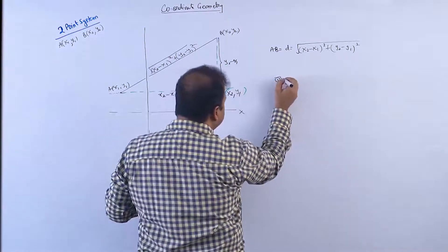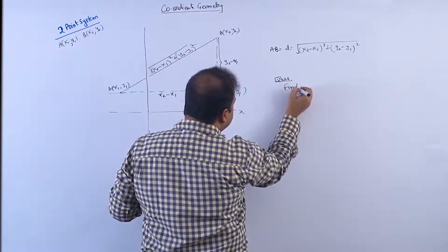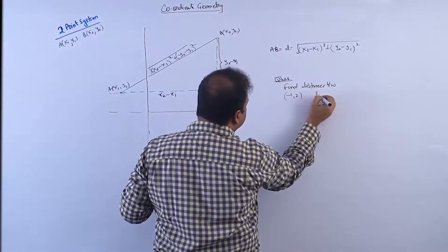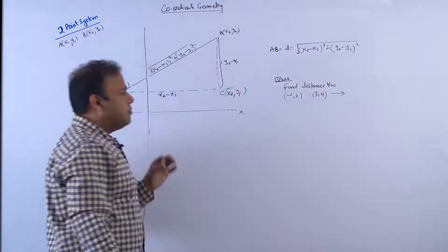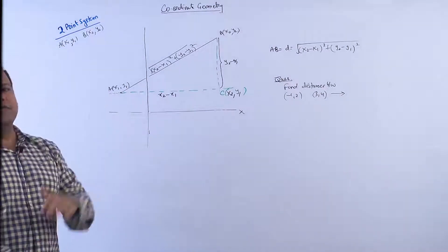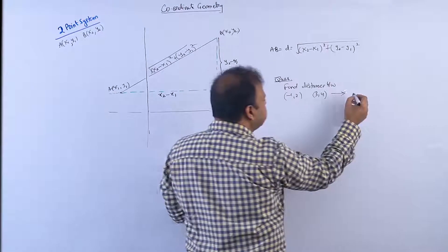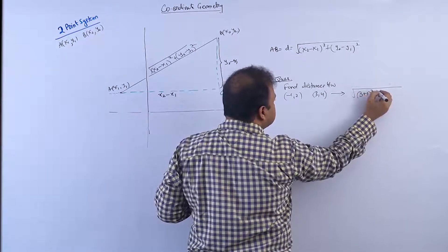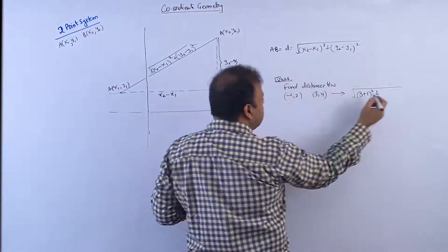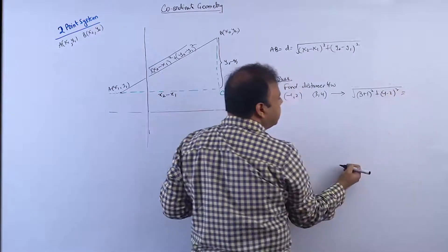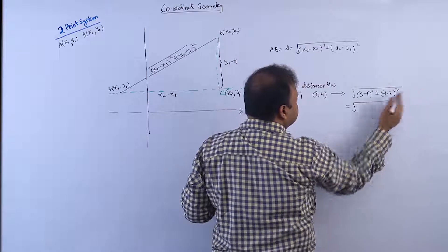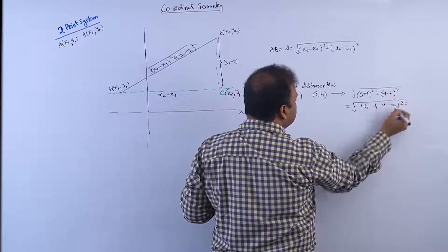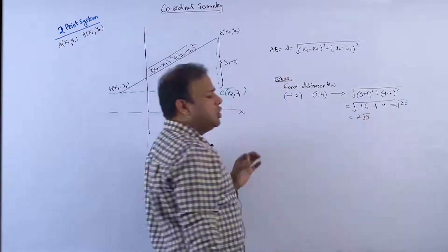Now we are going to solve some questions. Find the distance between (−1, 2) and (3, 4). That will be √[(3−(−1))² + (4−2)²] = √[(3+1)² + 2²] = √[16 + 4] = √20 = 2√5.